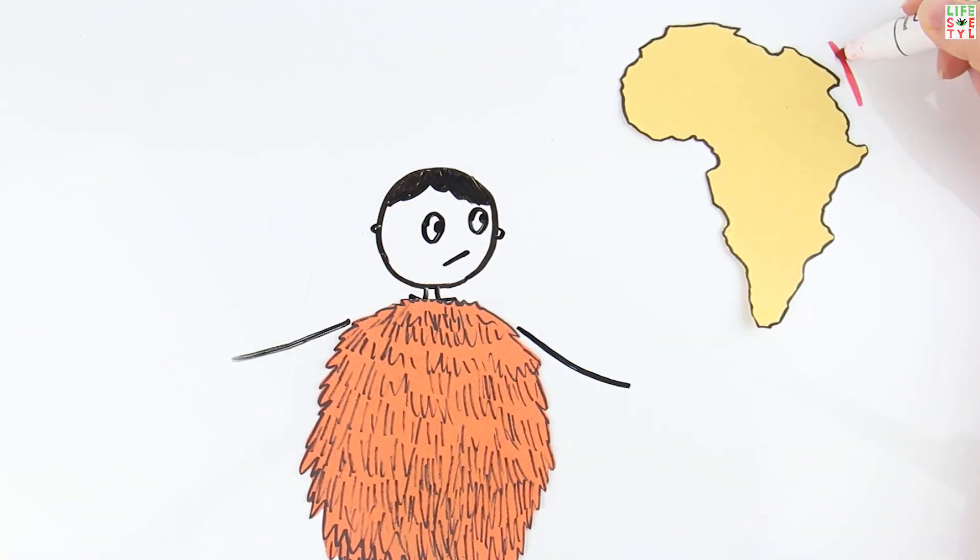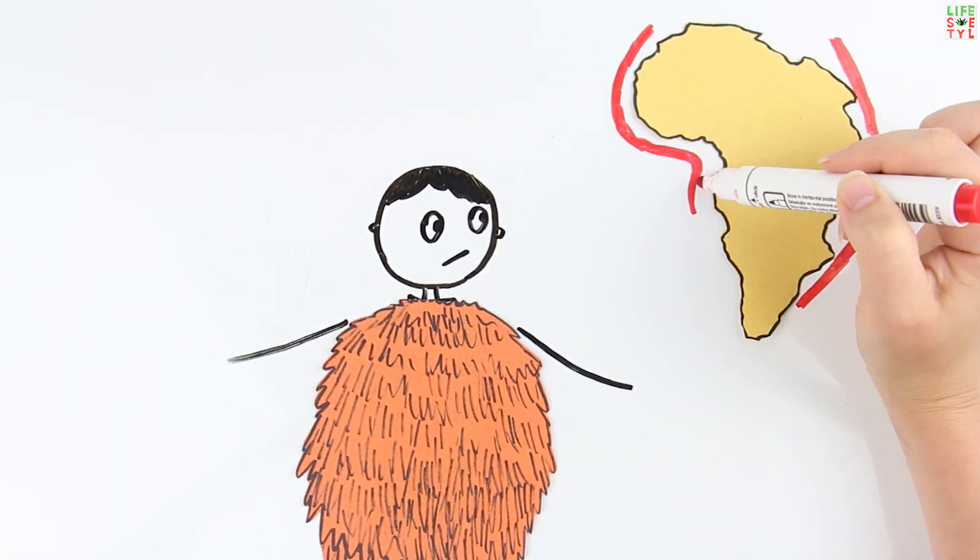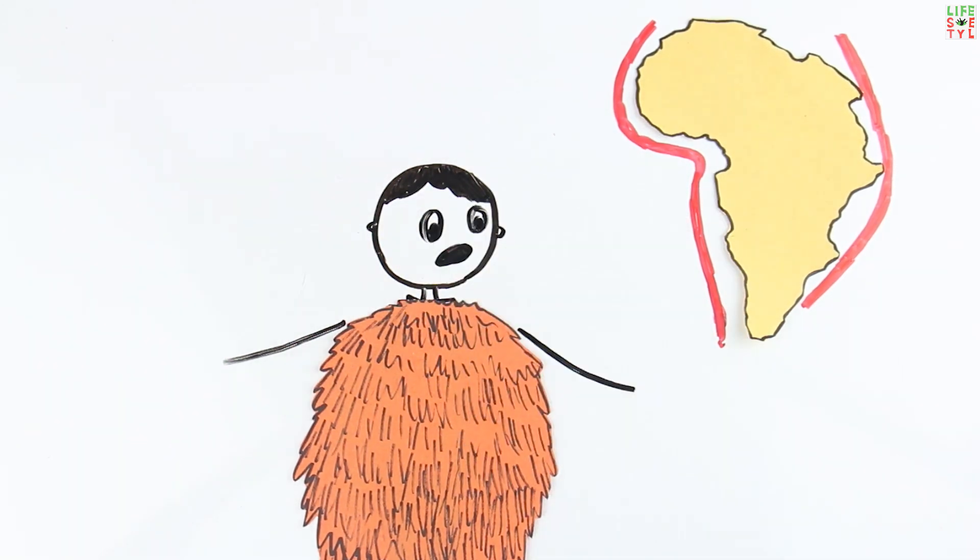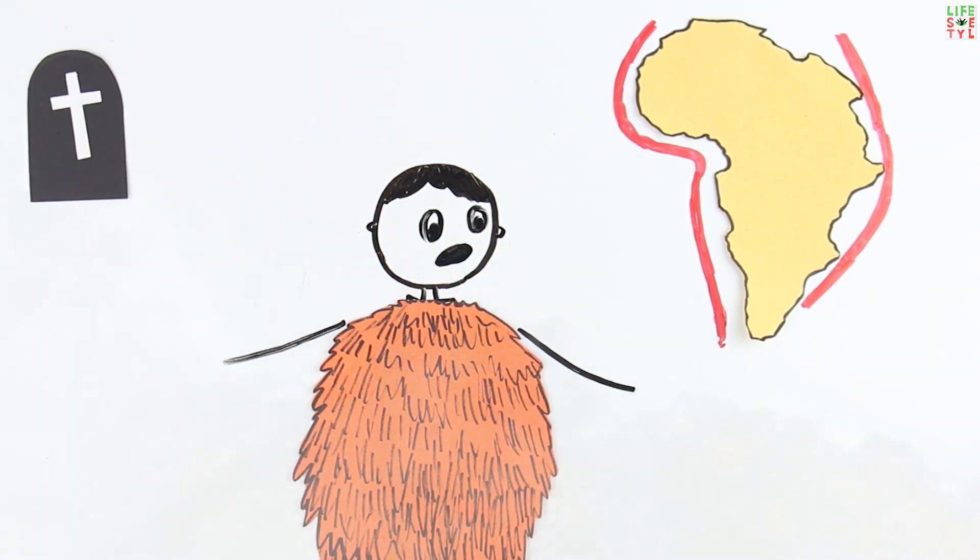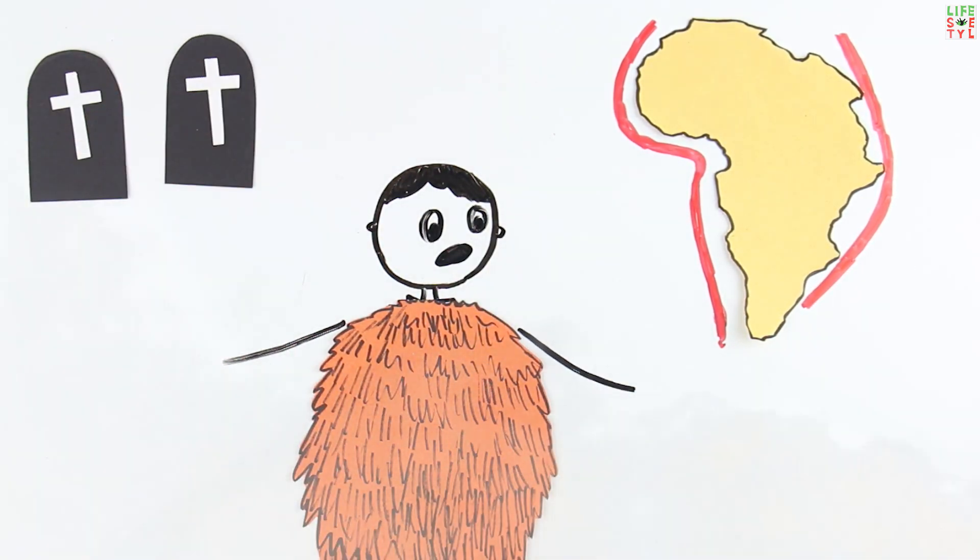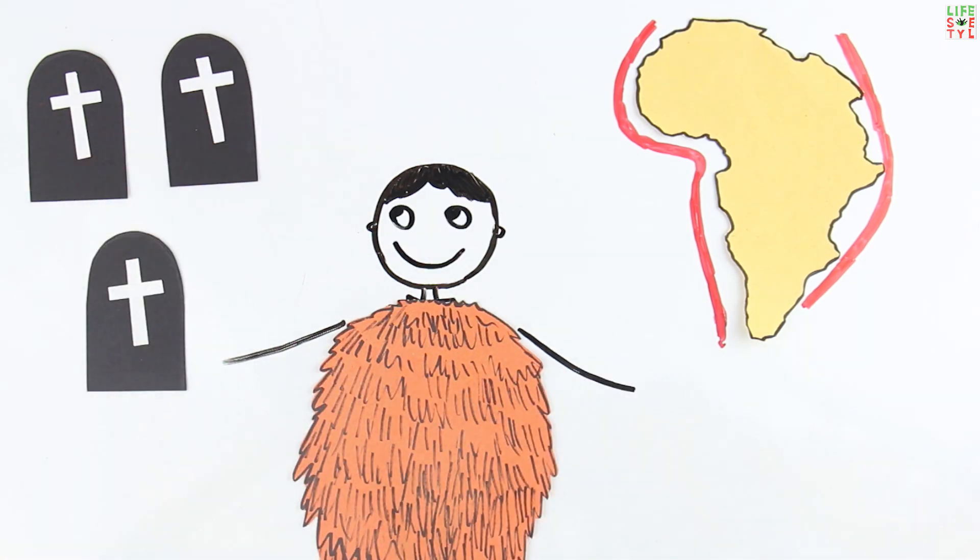You will live like other members of Australopithecus in the Pleistocene era in eastern and western Africa. The good news is that mammoths, dinosaurs, and mastodons are already extinct, so you do not need to be afraid of them.